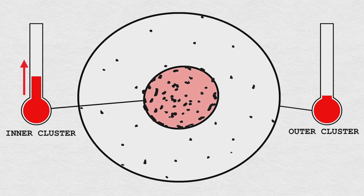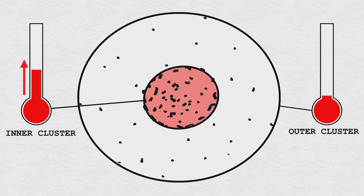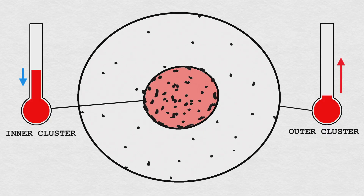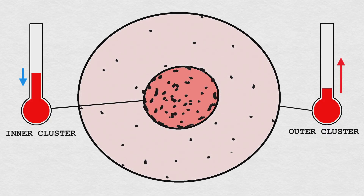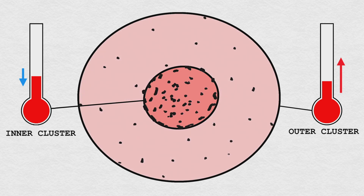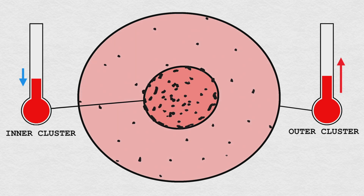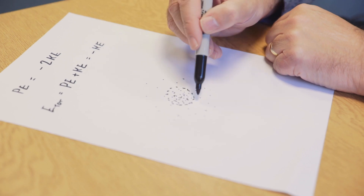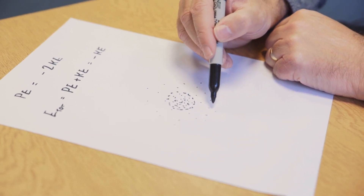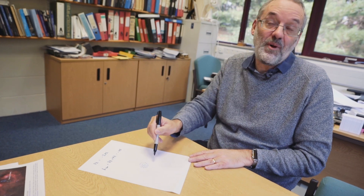Suppose the temperature — the kinetic energy — of the inner part became just a little bit higher by some random process. Its temperature is now higher than the surrounding region. The laws of thermodynamics say that energy will flow from higher temperature to lower temperature. So energy flows from the inner part to the outer part — we take energy out of the inner part. But because of negative heat capacity, taking energy out makes the temperature go up even more. In the outer part, energy is flowing in and because it has a normal heat capacity, its temperature also goes up.